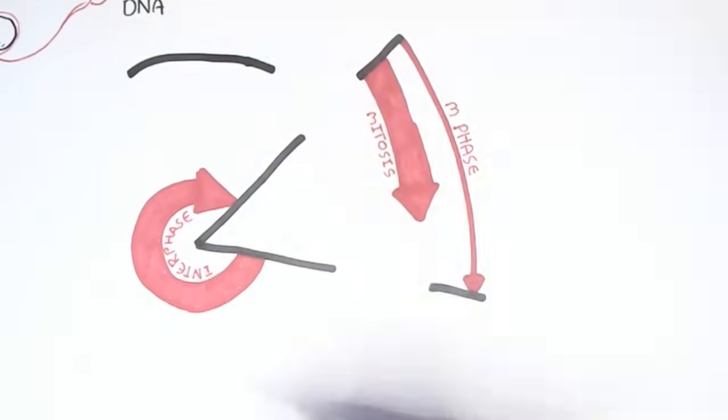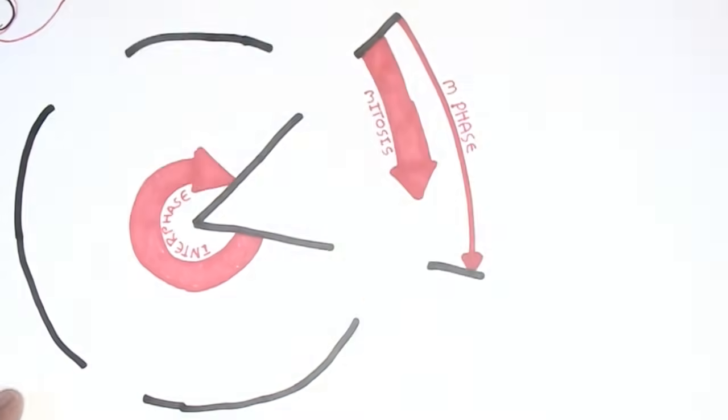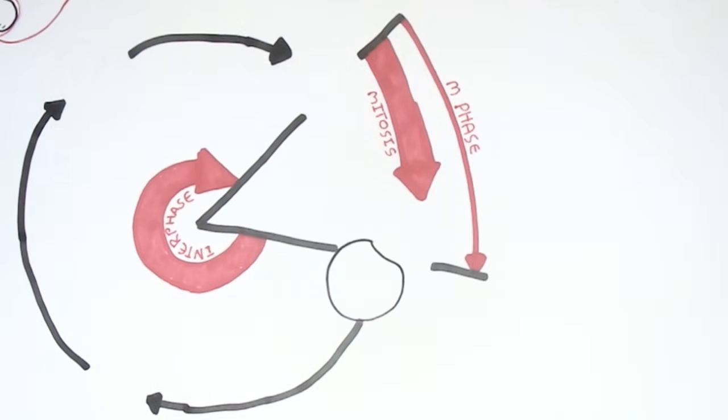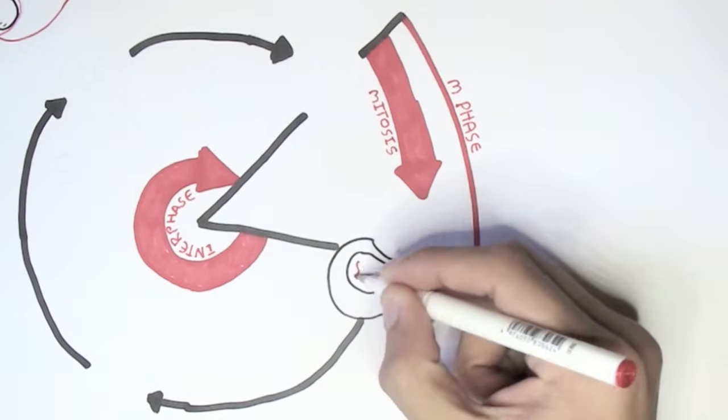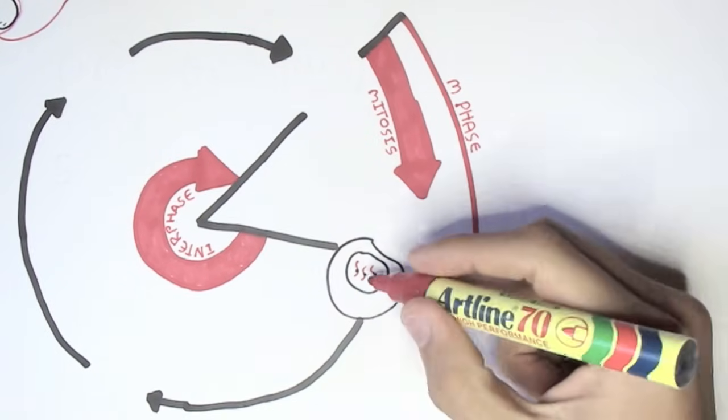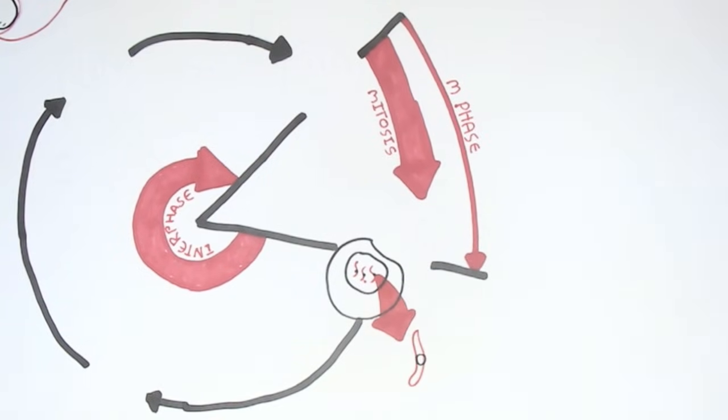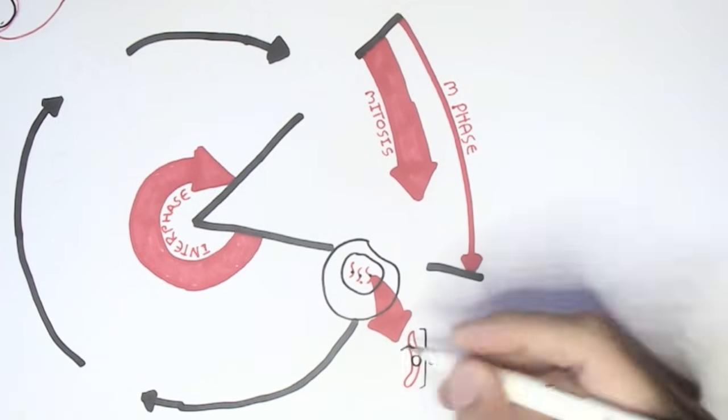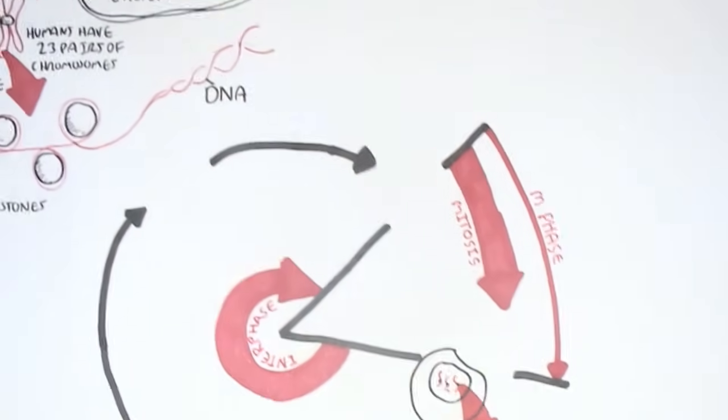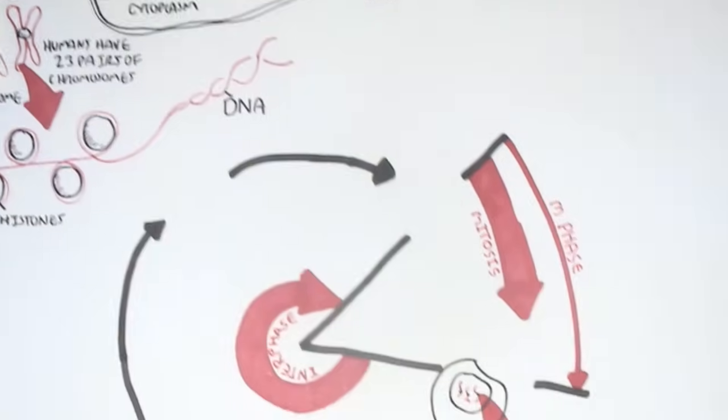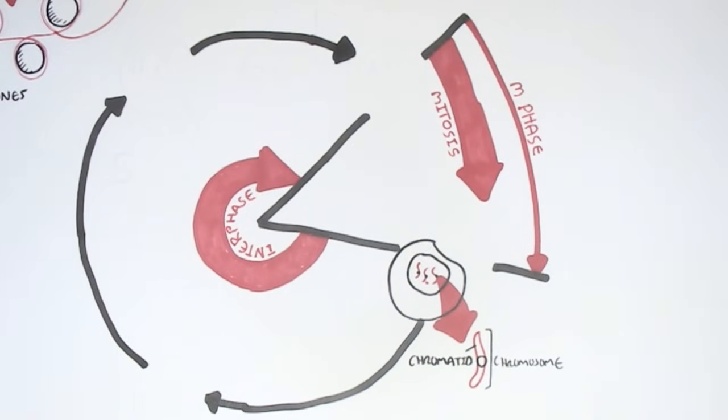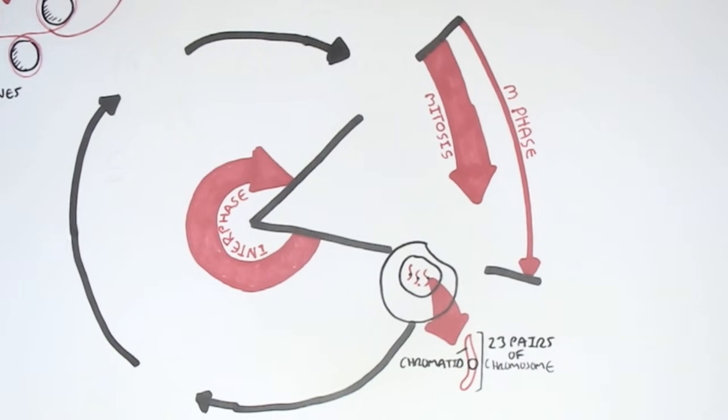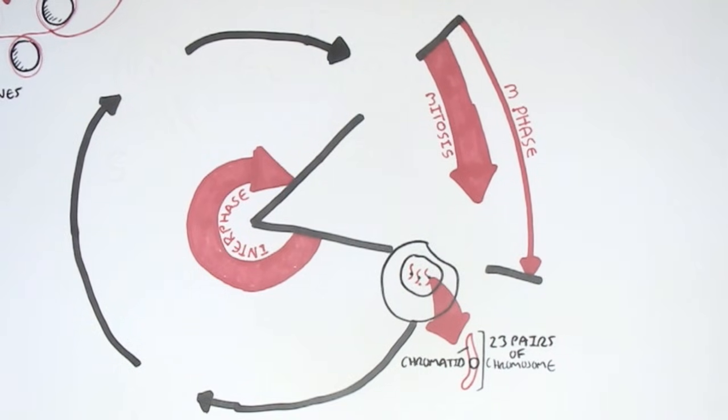Let's look at the interphase first, which prepares the cell for division. At the beginning of interphase, we have one daughter cell. This cell consists of chromosomes. This chromosome only has one chromatid. This cell still has 23 pairs of chromosomes. It just has one chromatid, which means that this cell has 46 chromosomes with 46 chromatids.